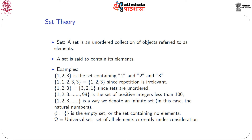Consider another example: a set consisting of elements 1, 1, 2, 3, 3. Here 1 is repeated twice, and so is 3. But this is nothing but the simple set {1, 2, 3}, since repetition is irrelevant in the case of a set. Also, this set {1, 2, 3} can be written as {3, 2, 1} because sets are unordered — ordering does not have any effect on a set.